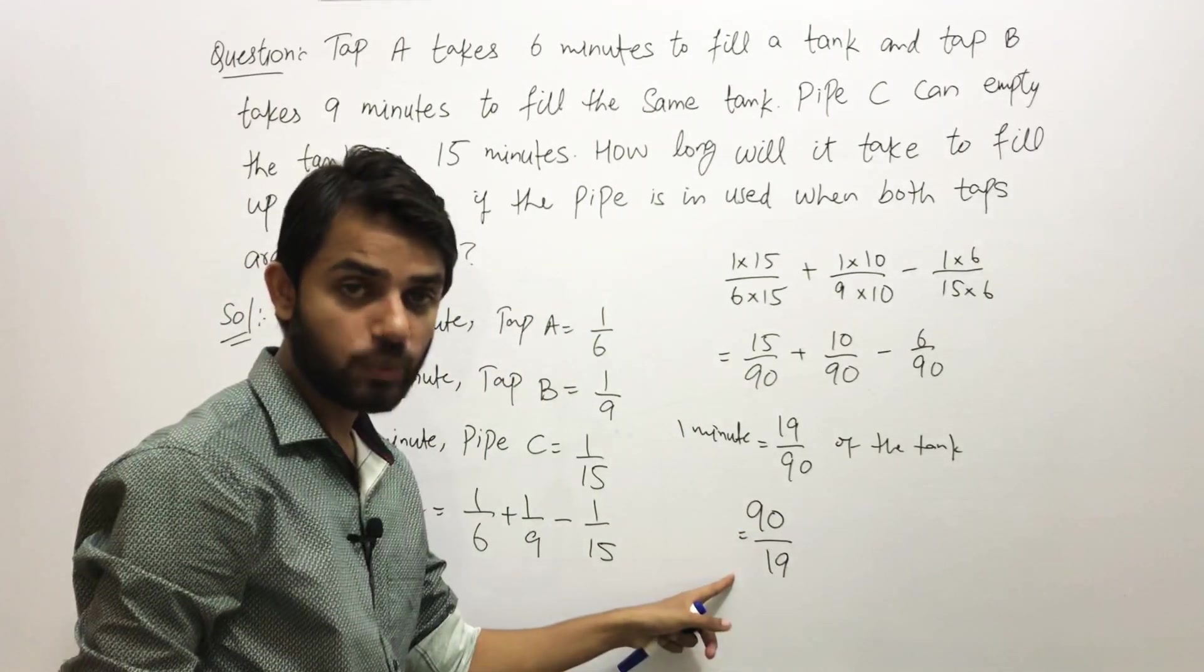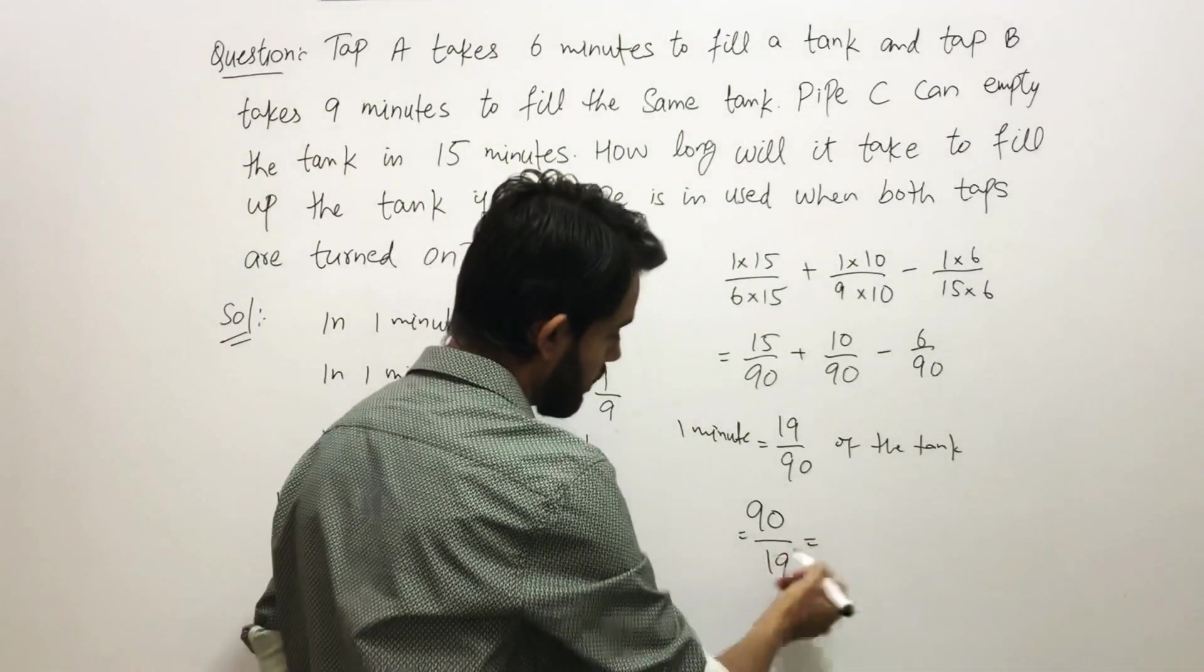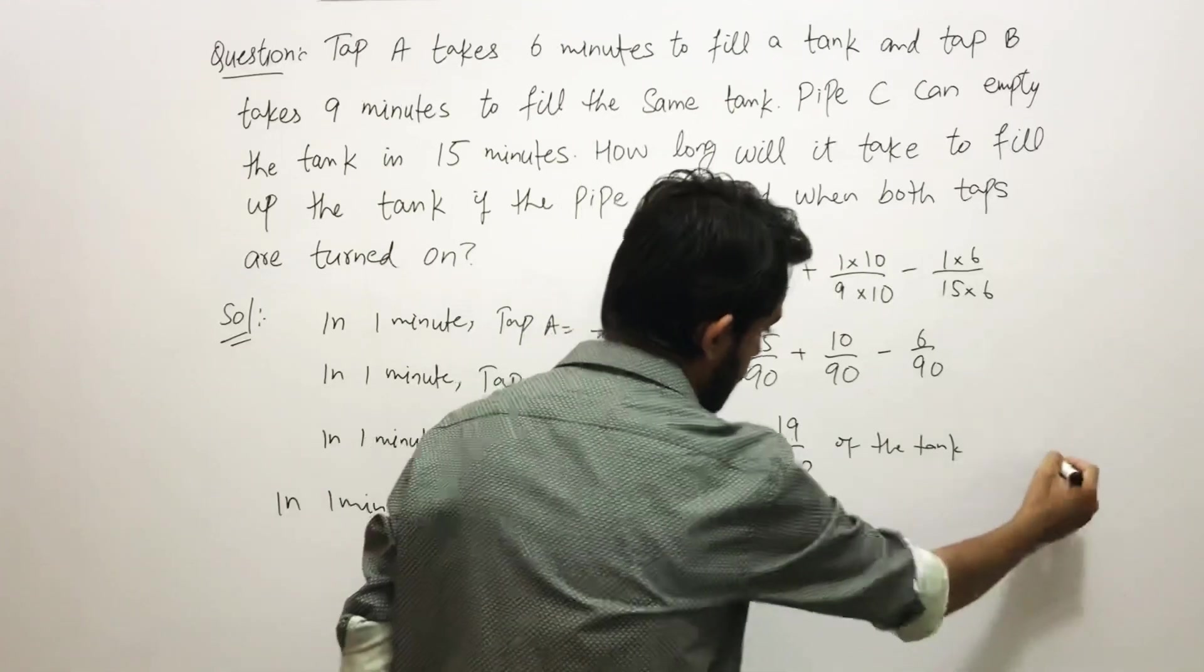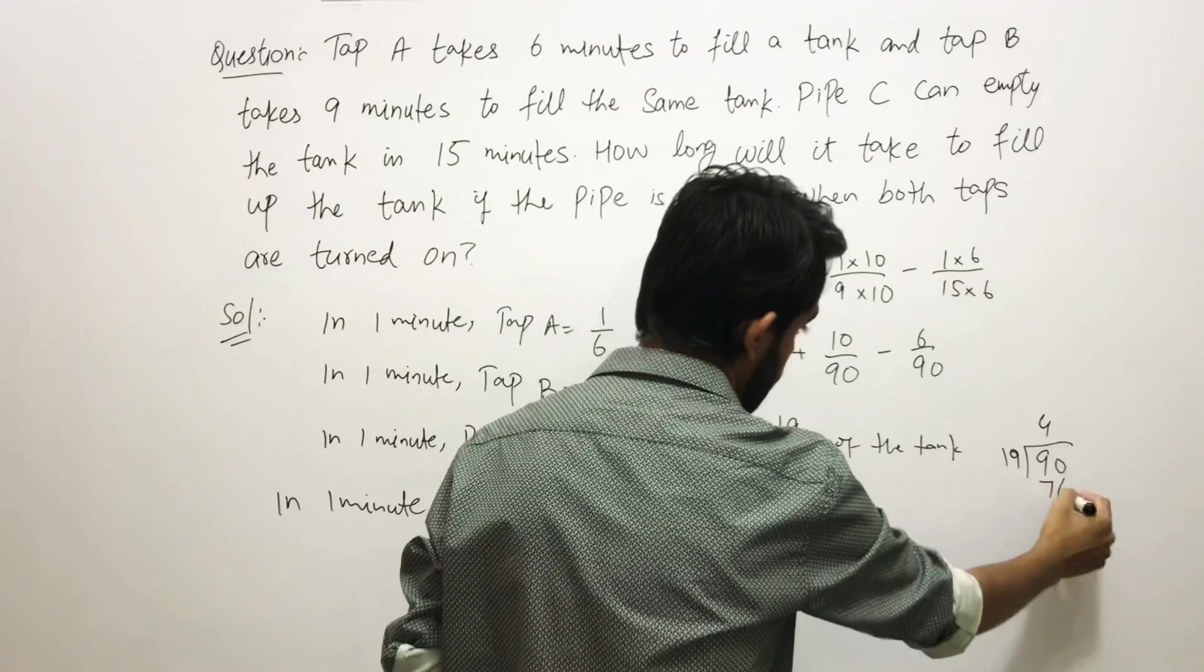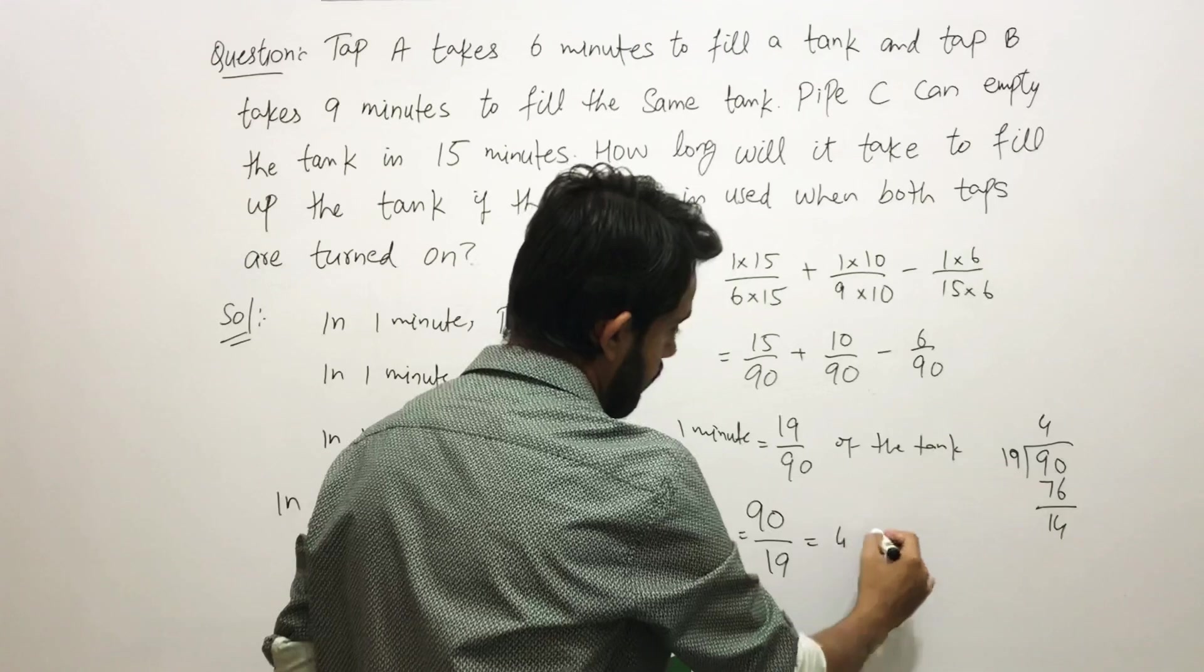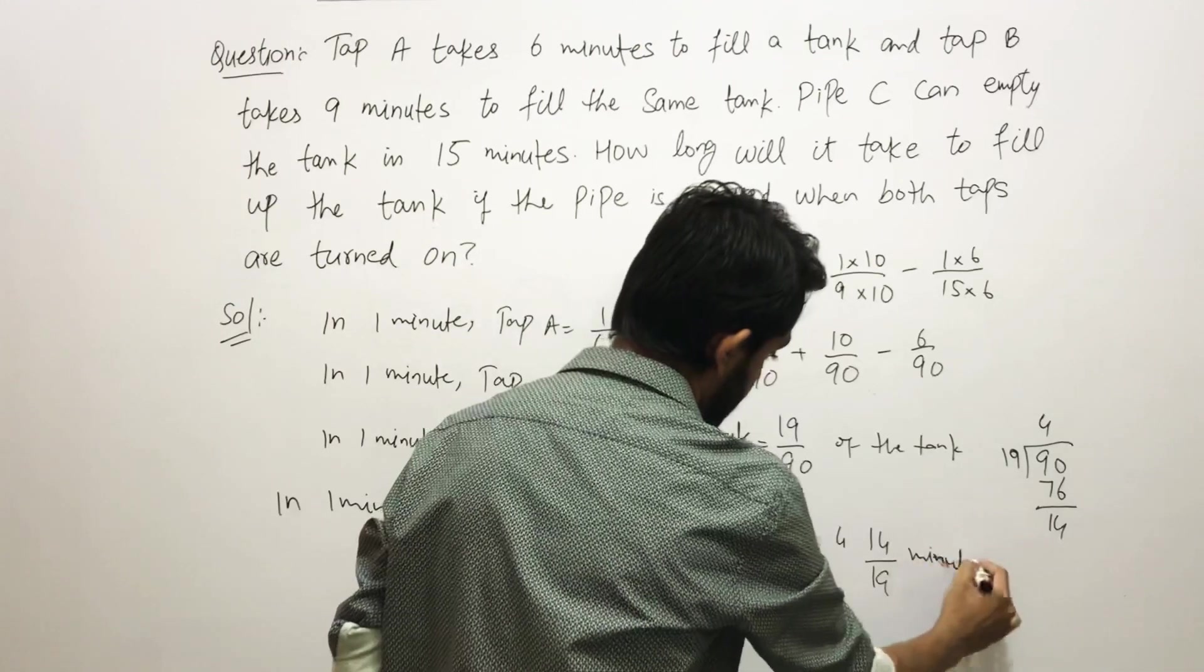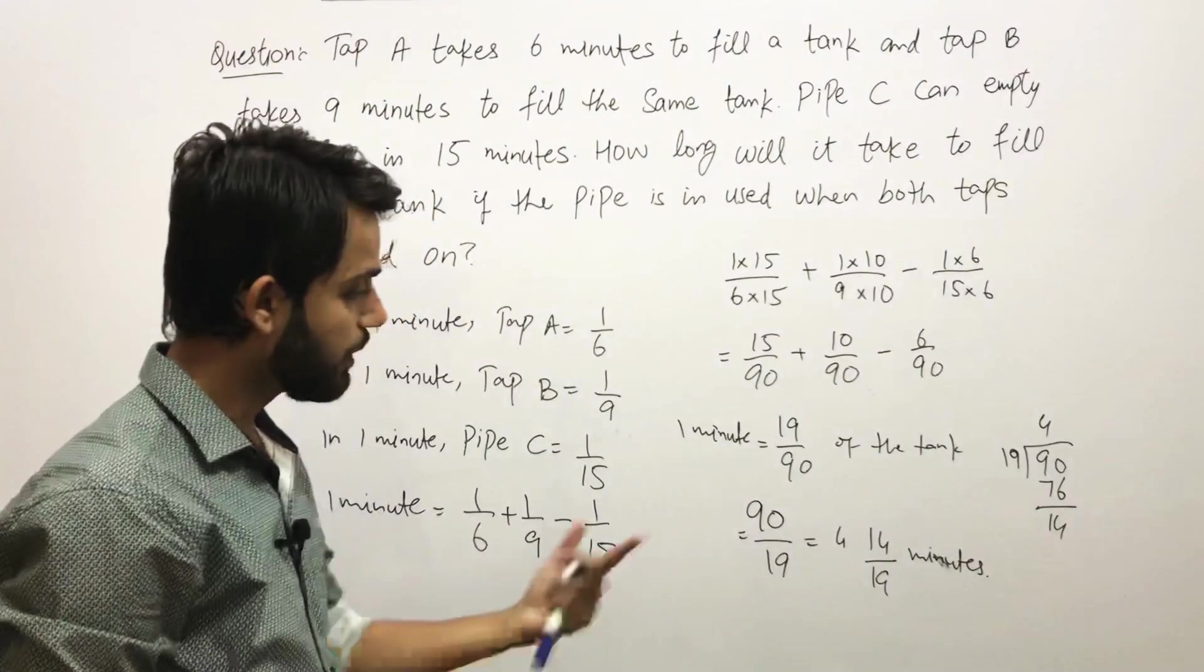This is the time that is required in order to fill the whole tank. 90/19—you can write it into a whole number. Divide 19 with 90. 19 times 4 would be 76, and you can write 4 whole number 14/19 minutes.